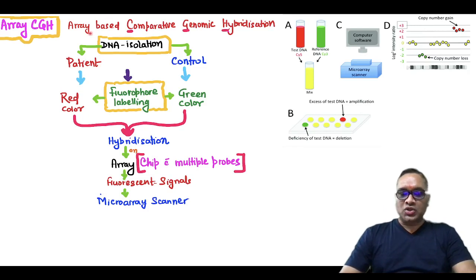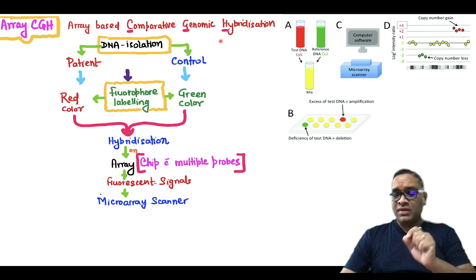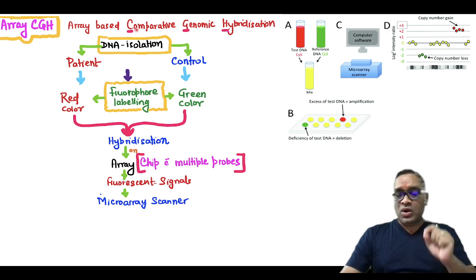Hello everyone, in this high-yielding shorts I am going to tell you about a process called microarray analysis, which is also known as array CGH, or array-based comparative genomic hybridization. This name itself is revealing information: comparative, meaning we are going to compare the genome of two things. How we are going to compare the genome is by the method of hybridization, so comparative genomic hybridization.